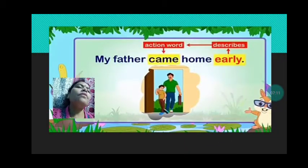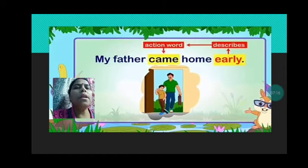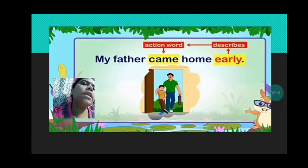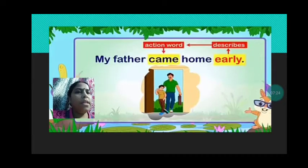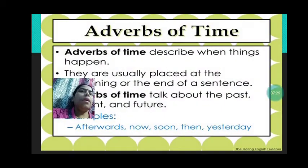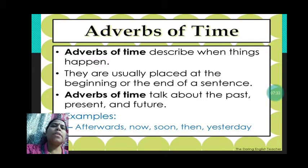See here: 'My father came home early.' What is the action word or verb? 'Came' is the action word. And 'early' describes when my father came — so he came home early. Here 'early' is adverb of time. Adverbs of time describe when things happen.